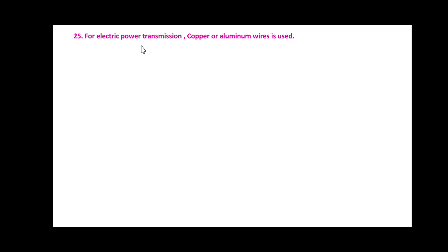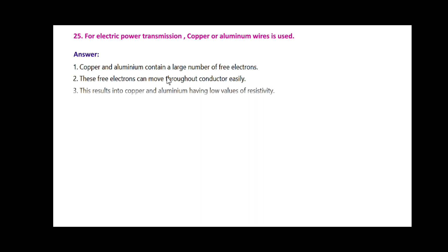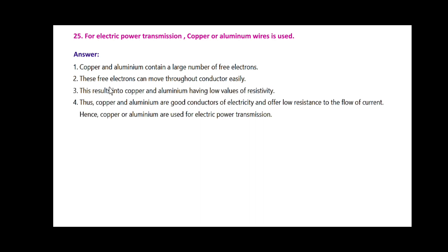For electric power transmission, copper or aluminum wire is used. Copper and aluminum contain a large number of free electrons. These free electrons can move throughout the conductor easily. This results in copper and aluminum having a low value of resistivity. Thus, copper and aluminum are good conductors of electricity and offer low resistance to the flow of current. Hence, copper or aluminum are used for electric power transmission.